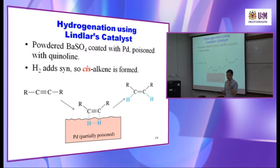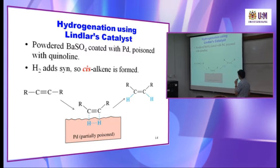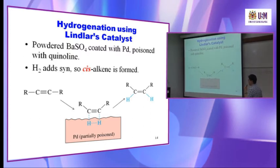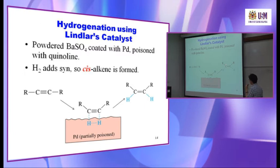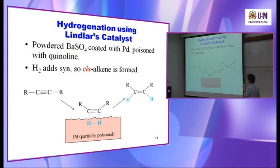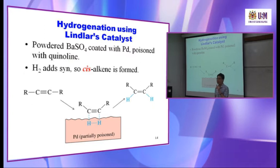In hydrogenation, the first addition of H2 to the triple bond yields an alkene. It's possible for the alkene to undergo a further reaction. In this case you use Lindlar catalyst — you just have to know the name 'Lindlar catalyst.' It is technically powdered barium sulfate coated with palladium poisoned with quinoline, which is very long, so knowing the term 'Lindlar catalyst' is enough.